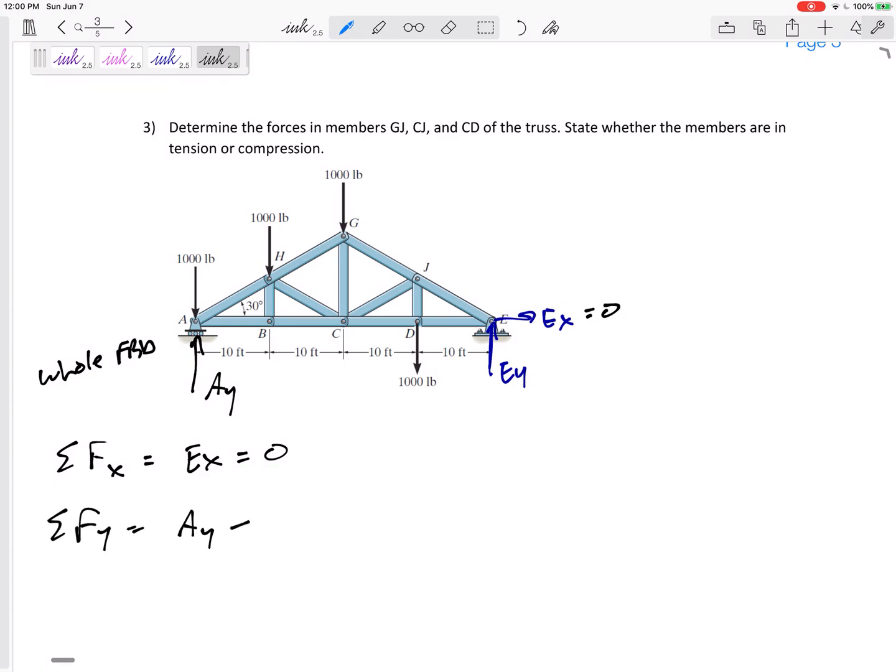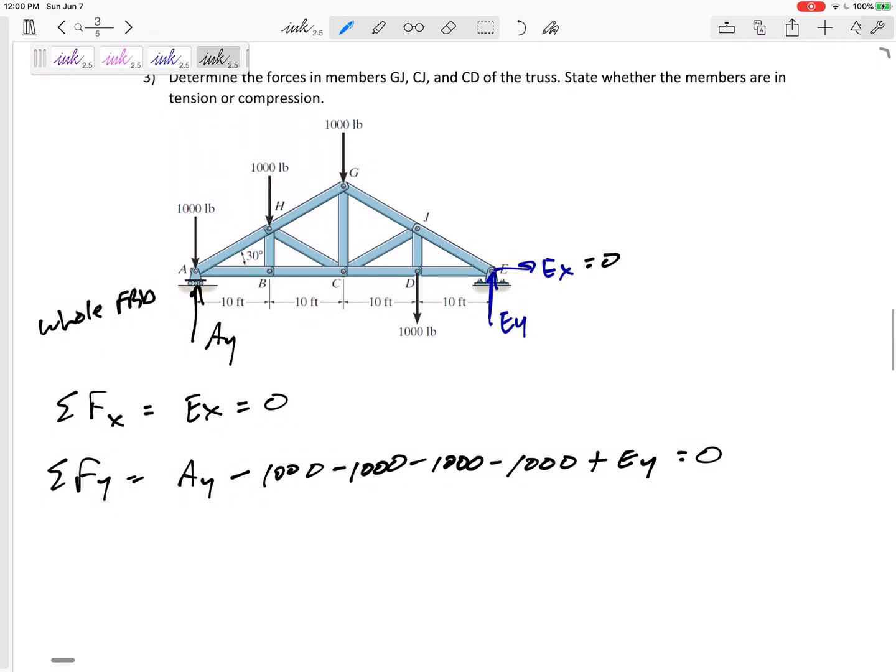Then I could sum the forces in Y. AY minus 1,000 minus 1,000. I could just say minus 4,000, couldn't I, here? Plus EY equals zero. But what I'm getting at, summing the moments probably summing the moments about A would let me solve for EY. But the one I'm following here, I'm going to sum the moments about E to let me solve for AY, and then with AY I could get EY.